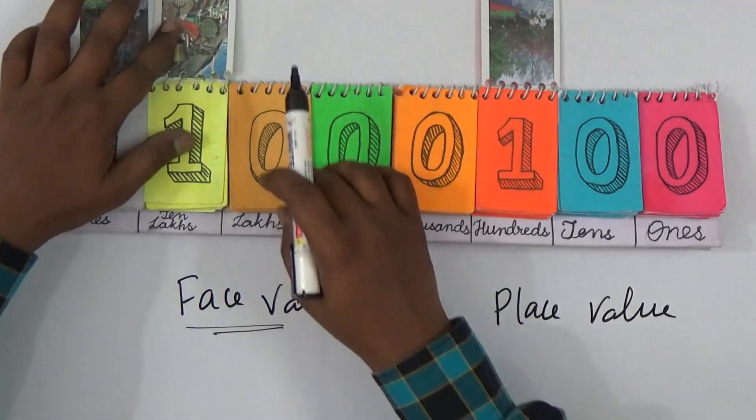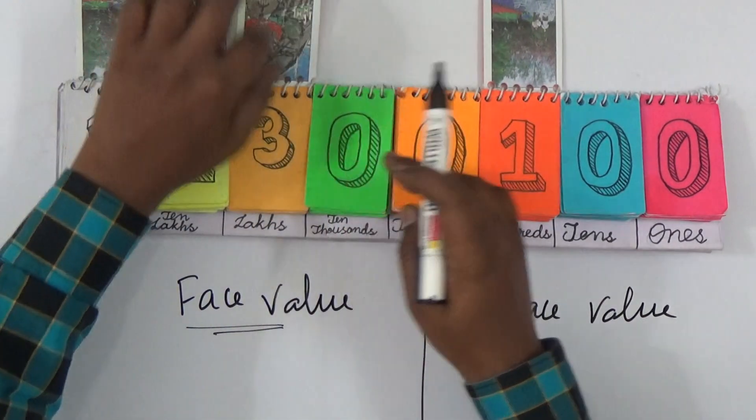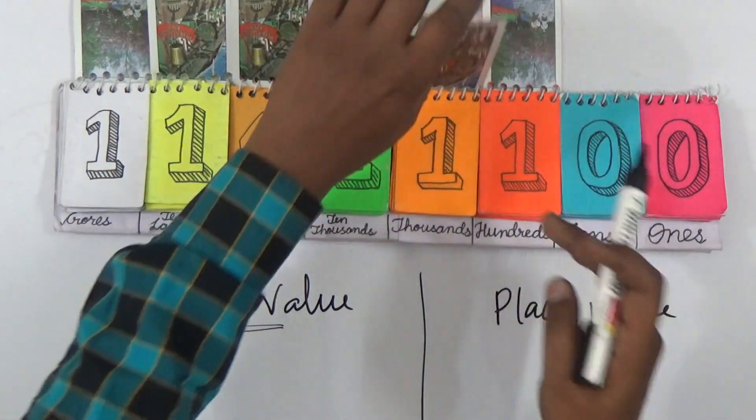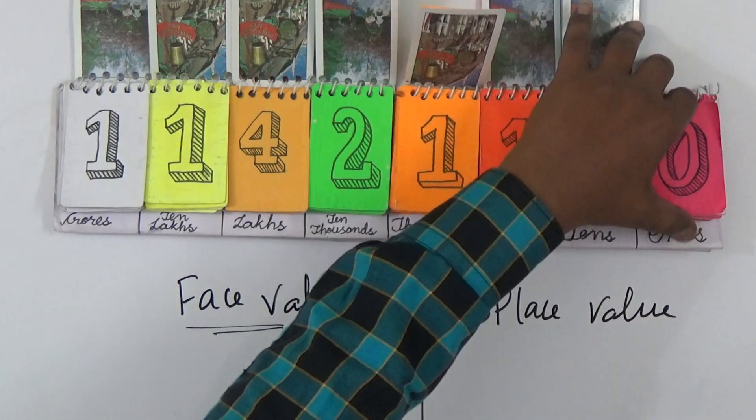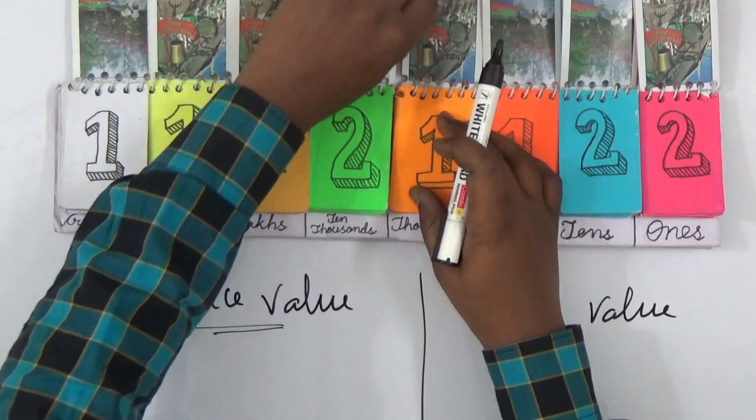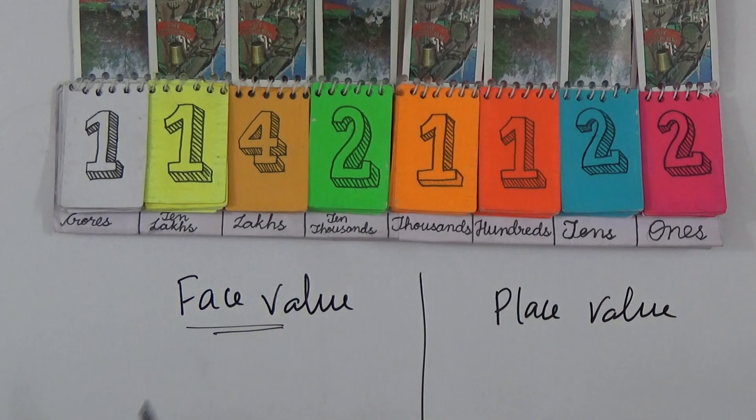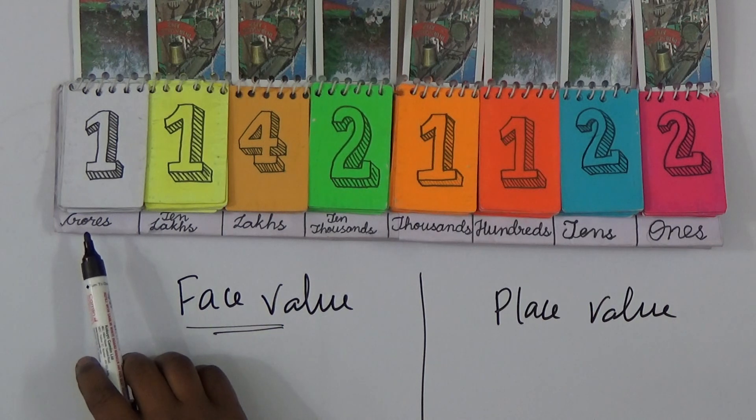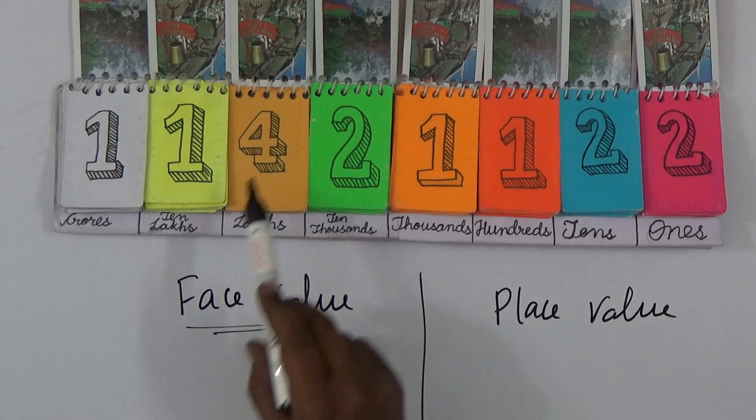We can make any numbers with these cards. Every set has zero to nine digits. Now observe this - this number we can read is one crore, one ten lakhs, and four lakhs, that means this is 14 lakhs.